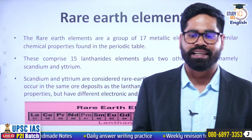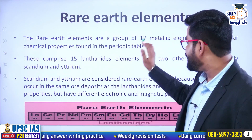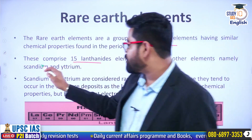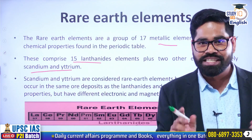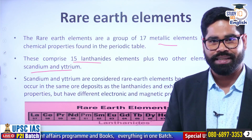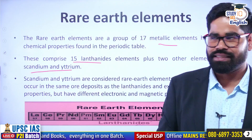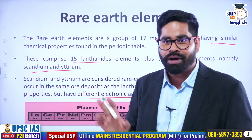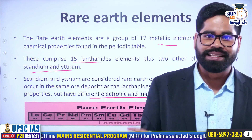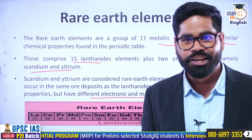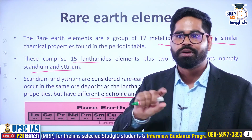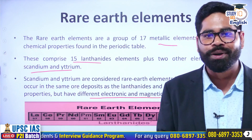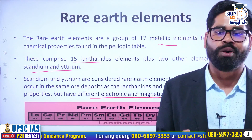Basically, there are 17 metallic elements called rare earth elements. These elements are also called lanthanoids. Around 15 lanthanide elements are there, and then we have scandium and yttrium — these 17 elements together have been called rare earth elements. They all have similar chemical properties, though they can have different electronic and magnetic properties. If you have seen the periodic table in class 10th, just below it there are two rows, and in one of those rows you will find lanthanides mentioned.